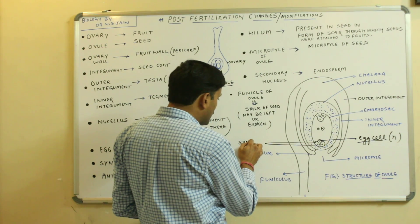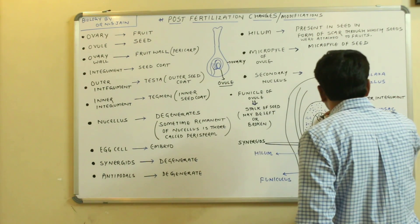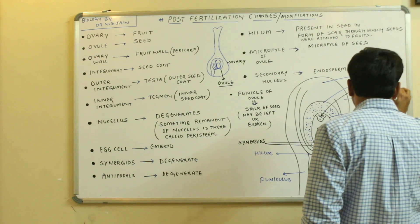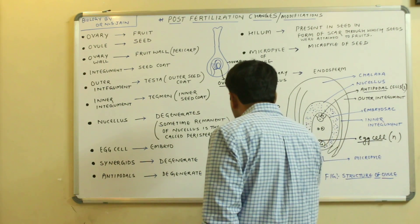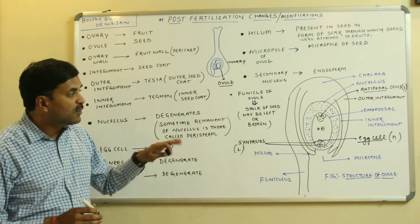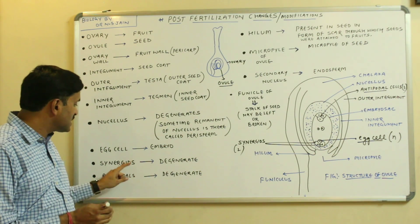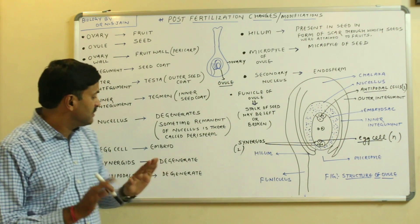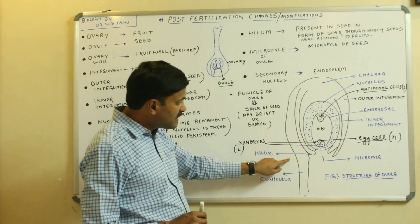Inside the embryo sac there are also two synergids and three antipodal cells. Both the synergids and the antipodals — as soon as the ovule is converted into seed and fertilization is over — degenerate totally.